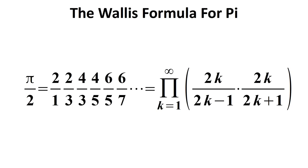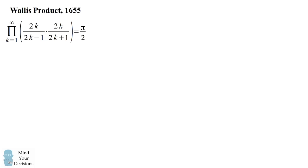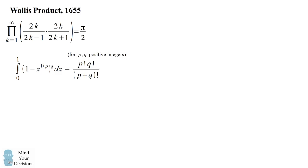This fantastic formula for pi was described in 1655. Wallis was studying integrals of the form 1 minus x to the power of 1 over p, all raised to the power of q, evaluated from 0 to 1. Through extensive calculation, Wallis found a pattern: this integral was equal to p factorial times q factorial divided by p plus q factorial. While he discovered it was true for positive integers, he wasn't able to evaluate this integral for non-whole numbers.